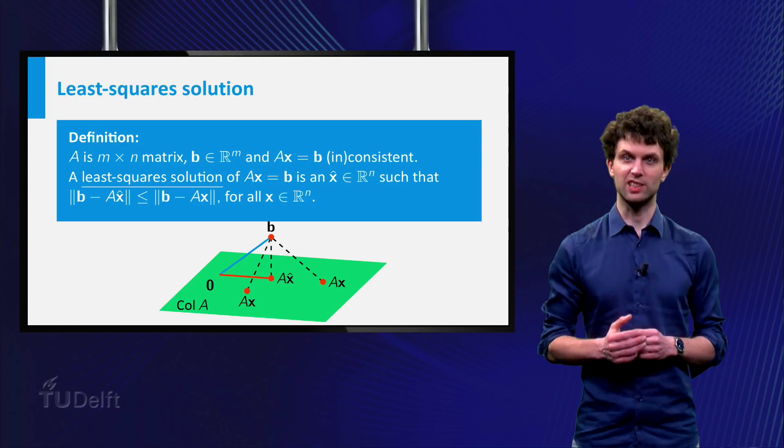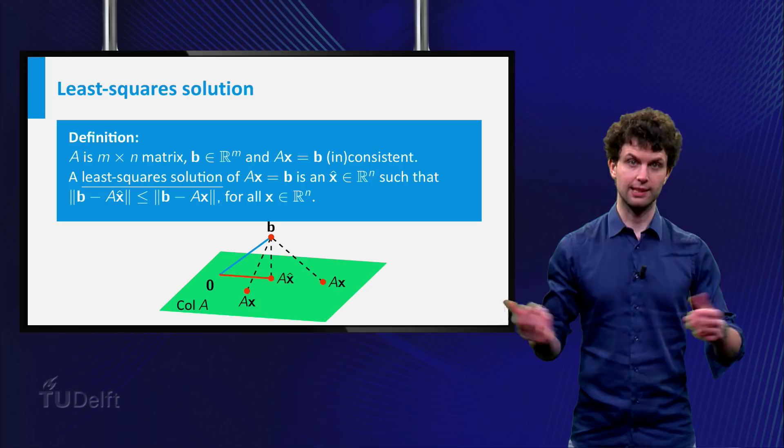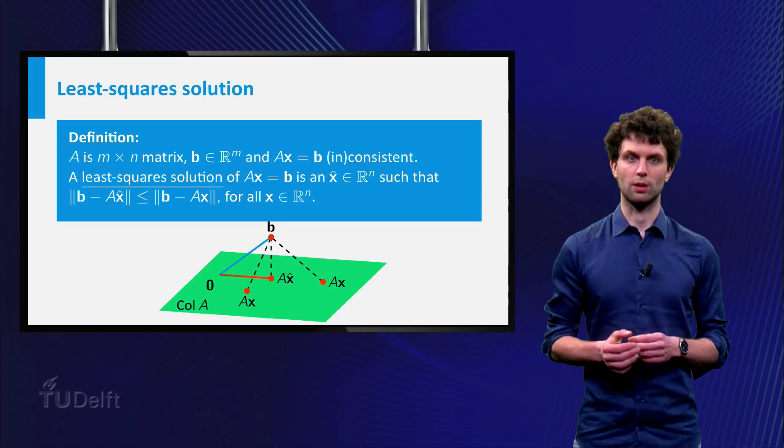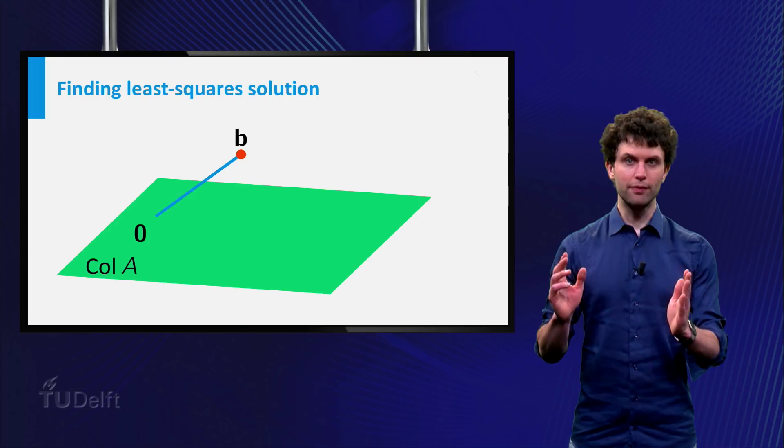The terminology least squares stems from the fact that the distance between two vectors is the square root of a sum of squares. So how do we find these least squares solutions? The rationale of the method of least squares is connected to the theory of orthogonal projections. Recall that the system Ax = b is consistent if and only if b lies in the column space of A.